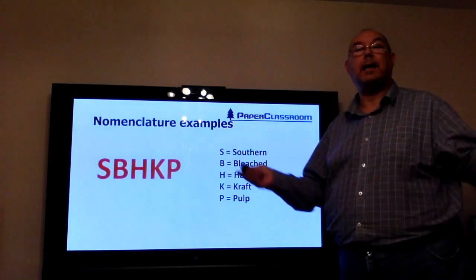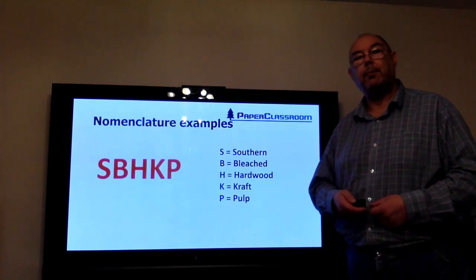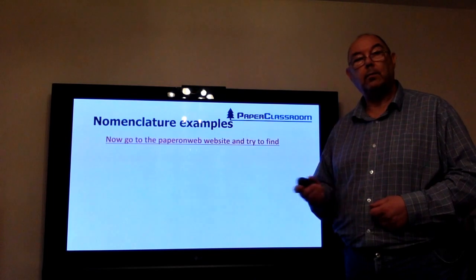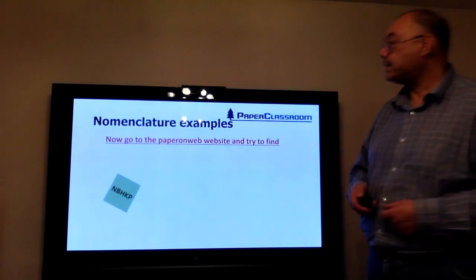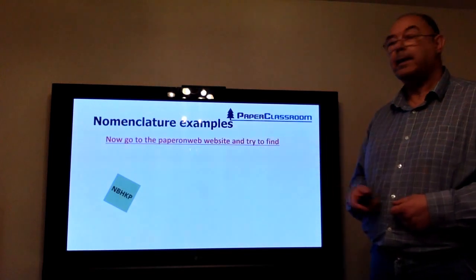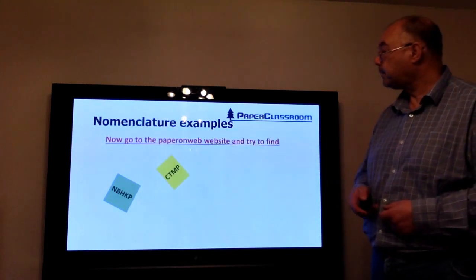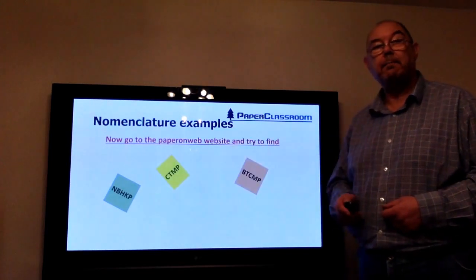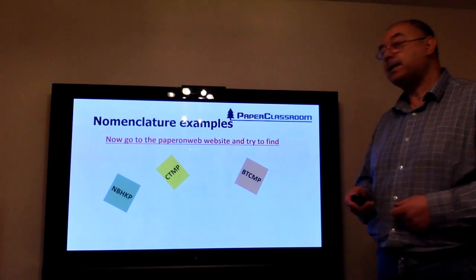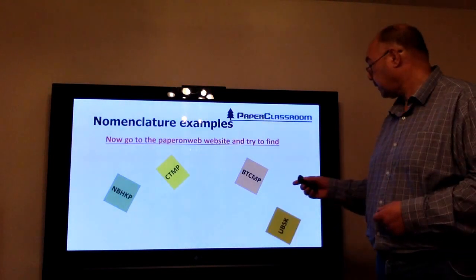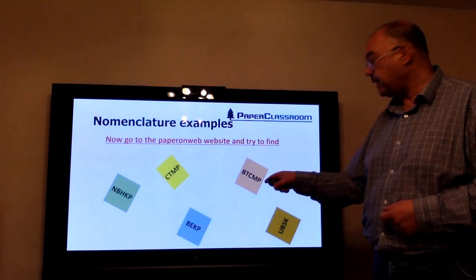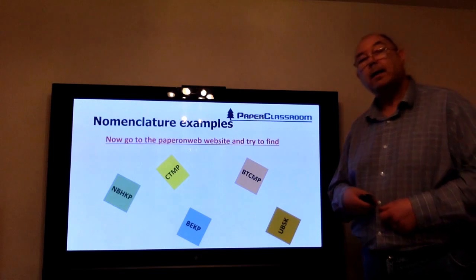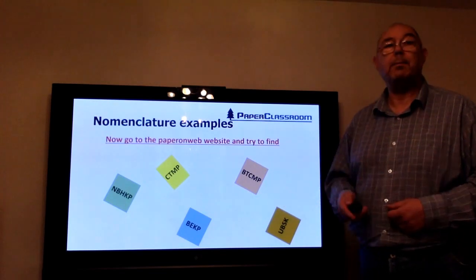Little exercise for you: go back to the paperonweb website and see if you can find out what these are—NBHKP, CTMP, BTCMP, UBSK, and finally BEKP. If you have any problems with those, send me an email.